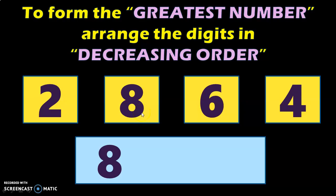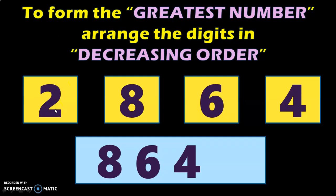The number which is smaller than 8 is 6, so next write down the number 6. The number which is smaller than 6 is 4, so next write down the number 4. And the smallest number among the given four digits is 2, so write down number 2. The greatest number formed using the given set of four digits is 8,642.